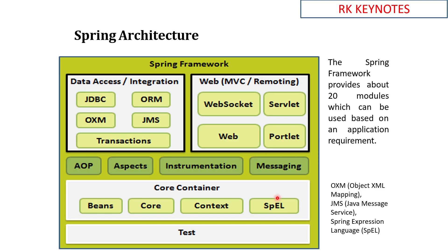In this architecture diagram you can see there is a data access layer and Web MVC, and core containers are available. Spring uses JDBC for database connections. ORM — Object Relational Mapping — which we discussed previously with Hibernate, is also supported. OXM is Object XML Mapping, which takes care of XML mappings. JMS is Java Messaging Service, which takes care of producing and consuming messages.